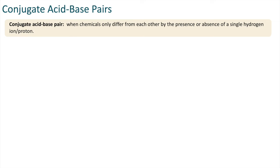The next term that we'll take a look at is conjugate acid-base pairs. These are chemicals that only differ from one another by the presence or absence of a single hydrogen ion or proton.